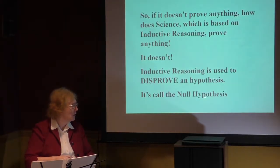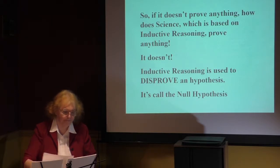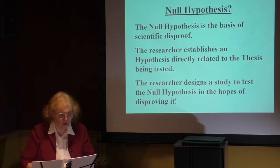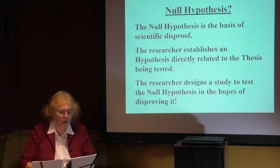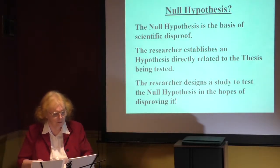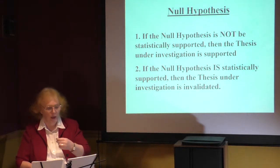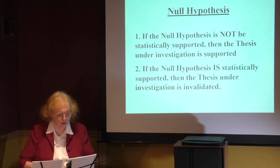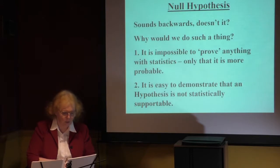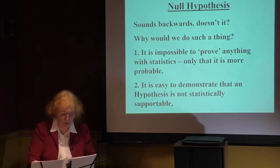The real answer comes down to the null hypothesis. It's easy to disprove; it's impossible to prove. The null hypothesis is the basis of scientific disproof. The researcher establishes a hypothetical hypothesis related to the thesis being tested, and designs a study to test the null hypothesis in the hopes of disproving it. If the null hypothesis is not statistically supported, then the thesis under investigation is supported. If the null hypothesis is statistically supported, then the thesis under investigation is invalidated. Sounds backwards — but it's impossible to prove anything with statistics; you can only show it is more probable, more likely. And it's easy to demonstrate that a hypothesis is not statistically supportable.